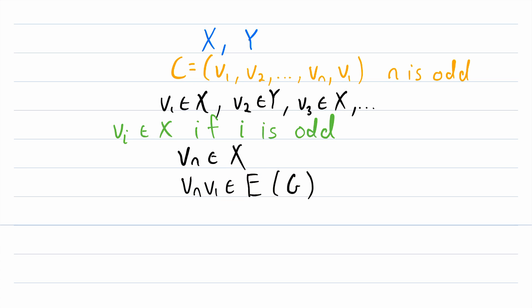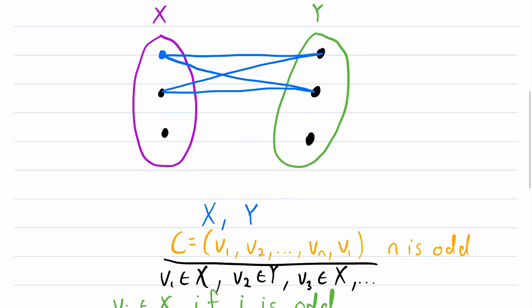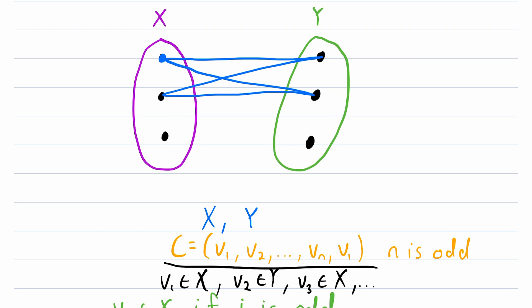This is a contradiction because remember, vn and v1 are both in the same partite set. Thus, by definition, they cannot be adjacent to each other. There can't be an edge that joins them. But by assuming that an odd cycle exists in our graph, that forces two vertices in the same partite set to be adjacent. And that is a contradiction. Thus, there cannot exist an odd cycle in a bipartite graph. And that, my friends, is really all there is to it. So I hope this video helped you understand how to prove that if a graph is bipartite, then it has no odd cycles.